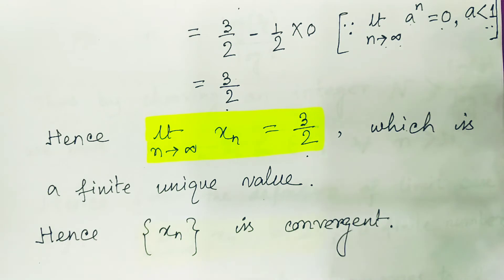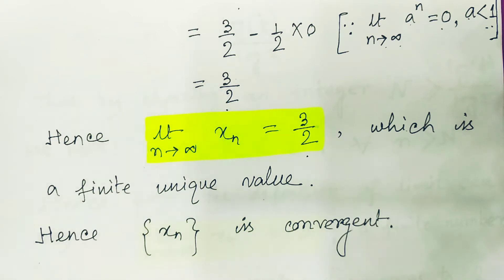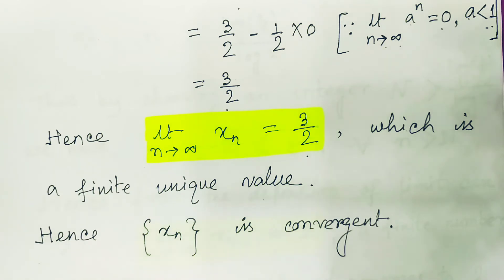So both processes can be applied to find the convergence of a sequence: either show the sequence is monotone and bounded, or directly find the nth term and take the limit as n tends to infinity. If this limit gives a finite unique value, then the given sequence is convergent.